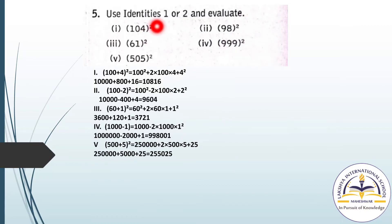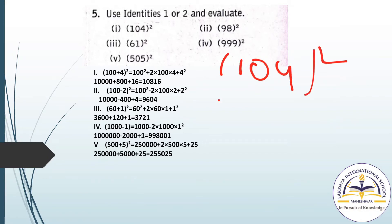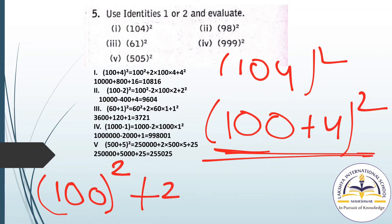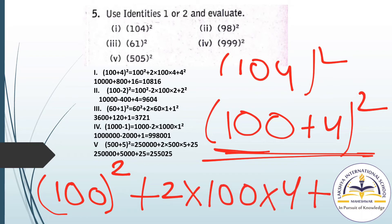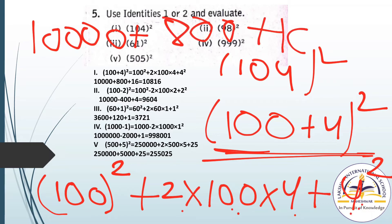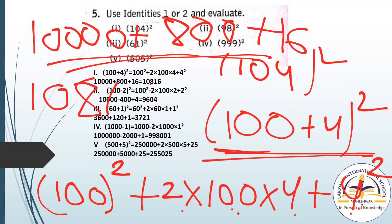Question number 5: use Identities 1 or 2 and evaluate. First, find 104 whole square. We write 104 as (100 + 4). Applying Identity 1: 100 square plus 2 into 100 into 4 plus 4 square. That gives 10000 plus 800 plus 16, which equals 10816.